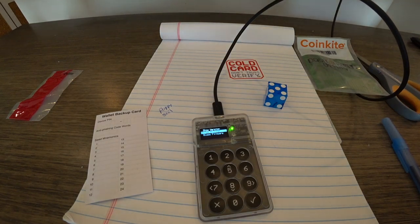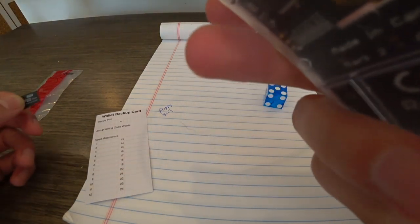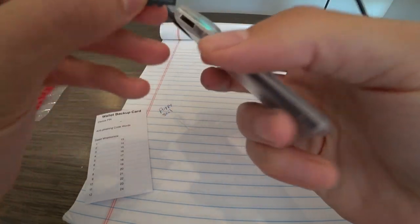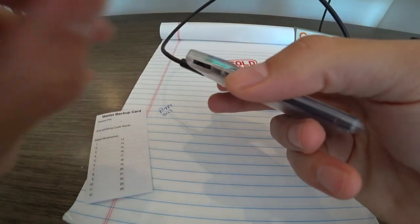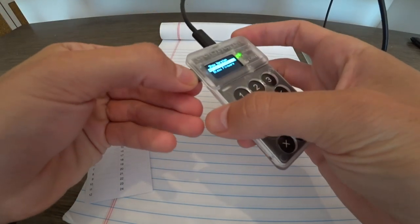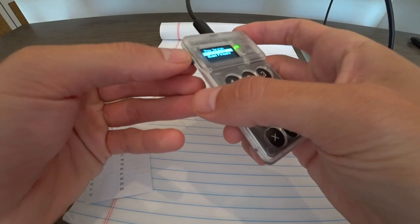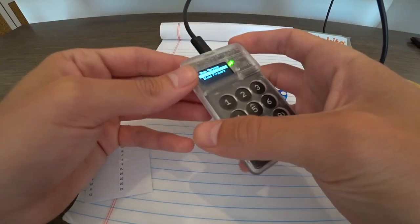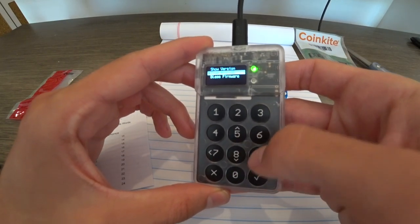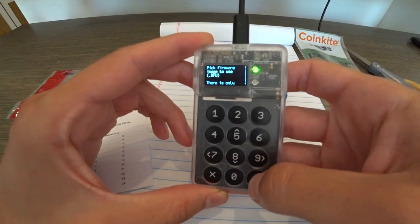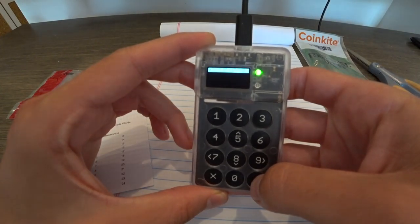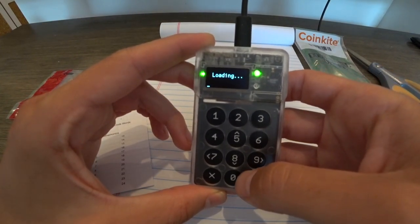So we come back to the cold card. It's got a nice little SD slot right here. We're going to stick the cold card in. Chip side up. Nice click. And we're going to press to upgrade from SD card. We're going to press from micro SD. Now it's telling us to pick which one to use. There's only one file. So we're going to pick that. Let's do that.